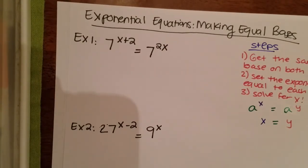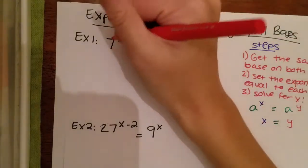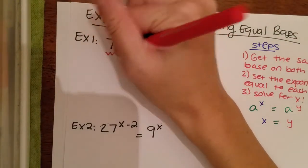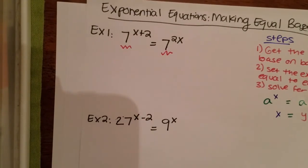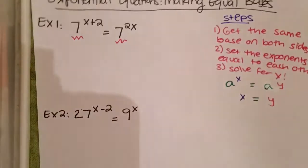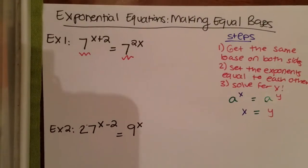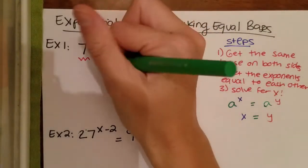Looking at our first example problem — do you guys already see that the bases are the same on both sides? Look at that. Since our bases are already the same on both sides, we can go ahead and set our exponents equal to each other.